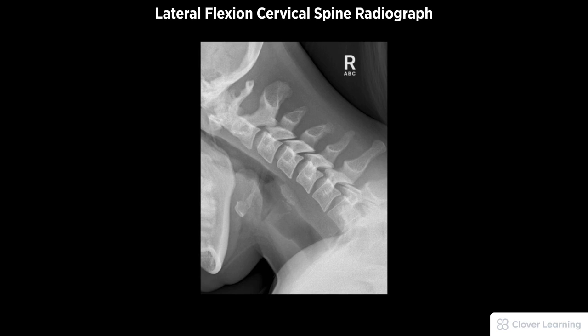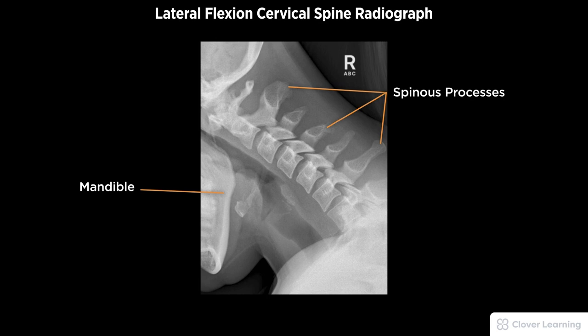A diagnostic lateral flexion cervical spine radiograph must be free of motion and rotation. Demonstrated anatomy includes the body of the mandible almost vertical, spinous processes in profile, elevated and widely separated, with proper visualization of soft tissue and bony detail.